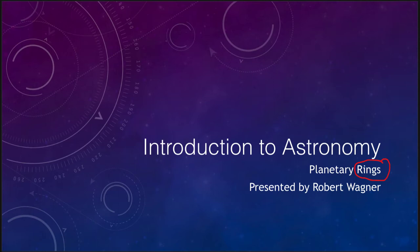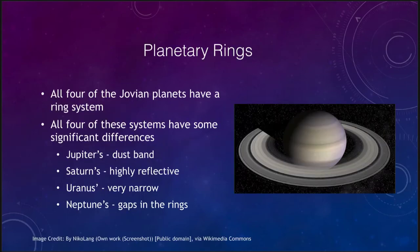The best known rings are around Saturn, but there are a number of planets that have rings as well. This is the planet Saturn and you can see its ring system stretching out around it. But it is not the only planet with a ring system. In fact, all four of the Jovian planets have a ring system around them.